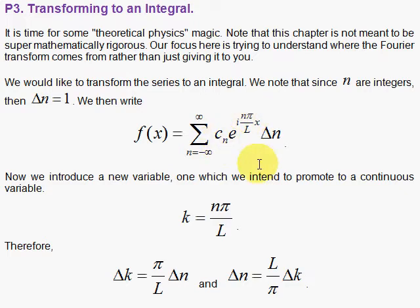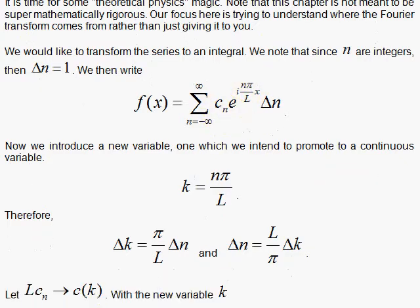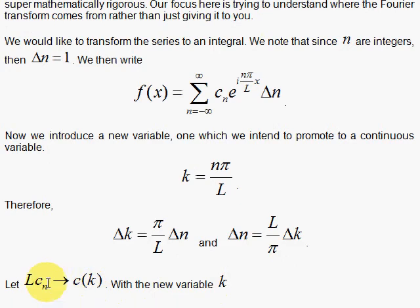And what about c_n? Well, I'm going to define L, which is going to come about from here, this Δn. There will be an L here. I'm going to take that L with c_n and define that as going to a function c of the continuous variable k.